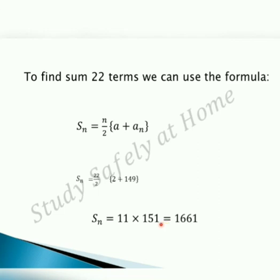Tens place plus units place gives 5 plus 1 equals 6. Then hundreds place plus tens place, that's 1 plus 5, also equals 6. Then write the first digit as is.